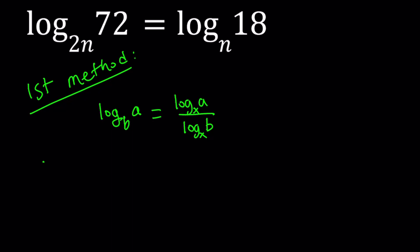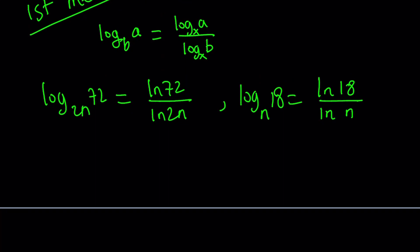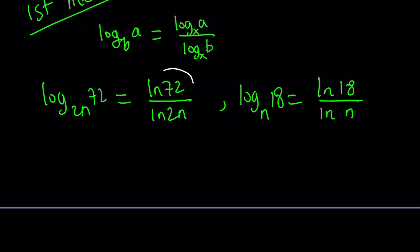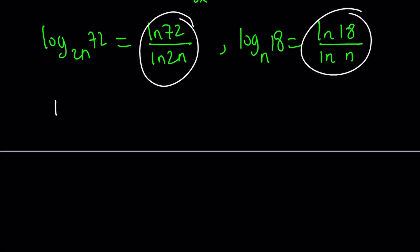Let's write log 72 base 2n as ln 72 over ln 2n, and the second expression as ln 18 over ln n. We have two expressions that are equal. Therefore, ln 72 over ln 2n equals ln 18 over ln n.